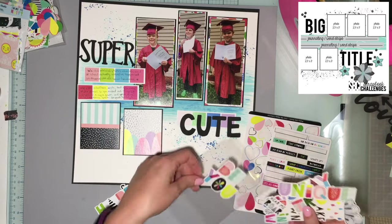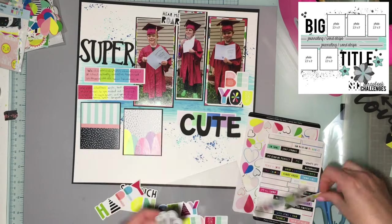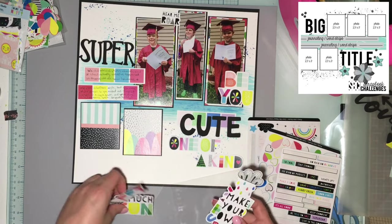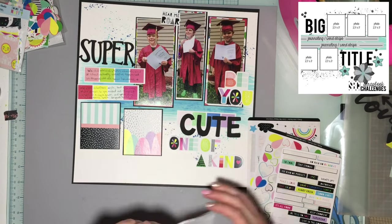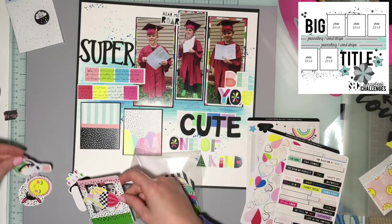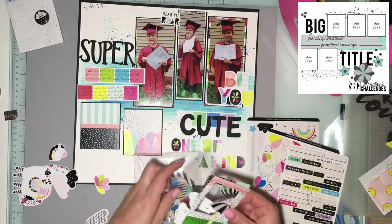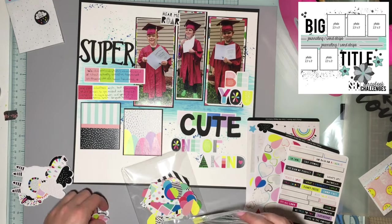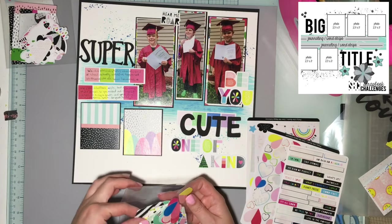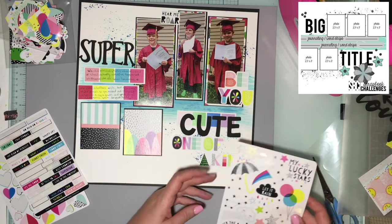I'm going to put 'super' up on the left and 'cute' down on the right. Then I'll use one of the cardstock word titles from this collection that says 'one of a kind.' As soon as I get the title down, I'm going to start arranging ephemera.